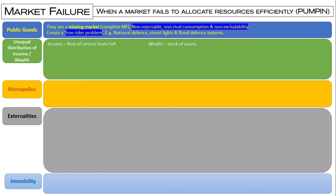See if you can draw and name the diagram to show the unequal distribution of income and wealth, and tell me about what coefficient that diagram helps you calculate. So hopefully you've drawn the Lorenz curve, and that Lorenz curve helps you create what's called the Gini coefficient. If the Gini coefficient is zero, that means income is equally distributed, and if it is one, it means there is maximum inequality in that economy.